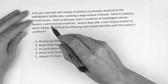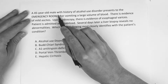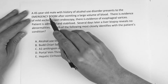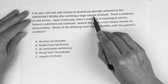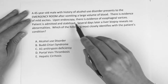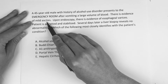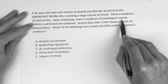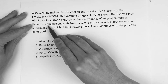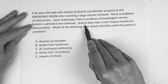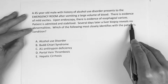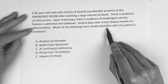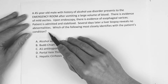Alright guys, so this question reads: a 45-year-old male with history of alcohol use disorder presents to the emergency room after vomiting a large volume of blood. There is evidence of mild ascites. Upon endoscopy there is evidence of esophageal varices. Patient is admitted and stabilized. Several days later a liver biopsy reveals no abnormalities. Which of the following most closely identifies with the patient's condition?